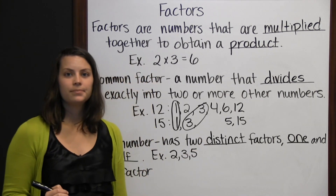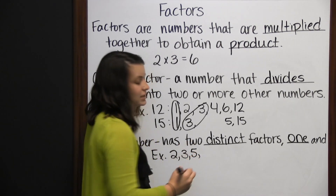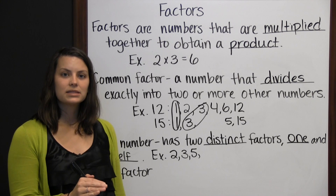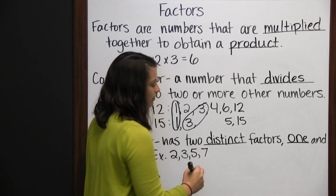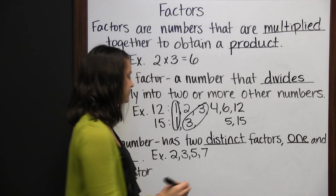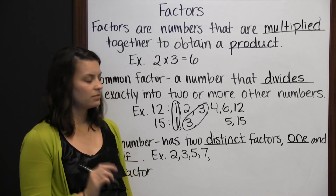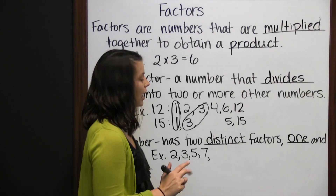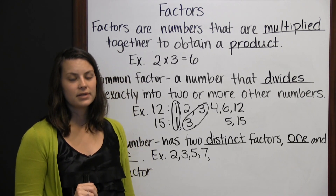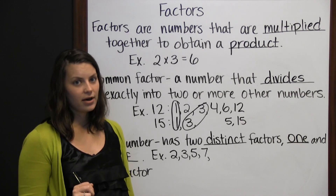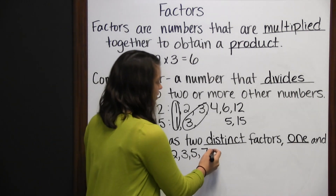5 would be prime — its only factors are 1 and 5. 6 would be composite: 1 times 6 is 6, and 2 times 3 is 6. 7 would be prime, since its only factors are 1 and 7. 8 would be composite: 1 times 8 is 8, and 2 times 4 is 8. 9 would also be composite: 1 times 9 is 9, and 3 times 3 is 9. 10 would also be composite: 1 times 10 is 10, and 2 times 5 is 10. 11 would be prime: 1 times 11 is 11, and so on and so forth.